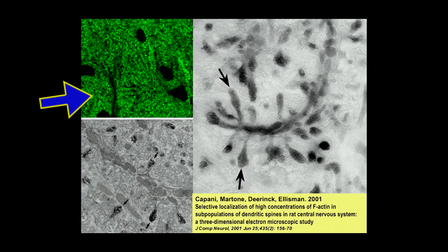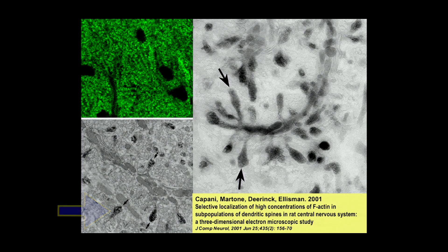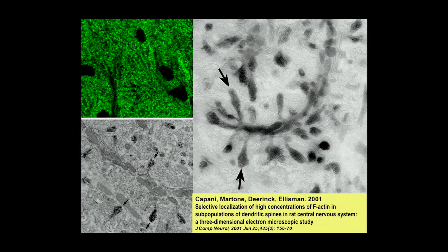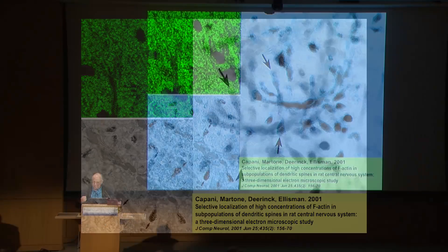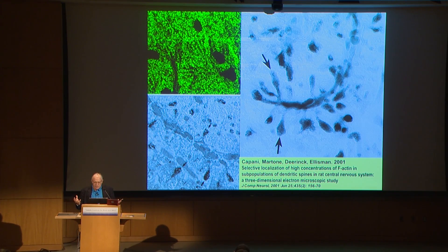If you switch to the eosin phalloidin, that's the light microscopy actin — looks like it's all over, but it's not actually. It's concentrated in the spines. And if you punch through it — this is not a tomogram, it's just a projection — the spines are full with this flocculent material that's actin. It's not just filaments. Like we know in cells now, a gel actually forms dodecahedral plates.